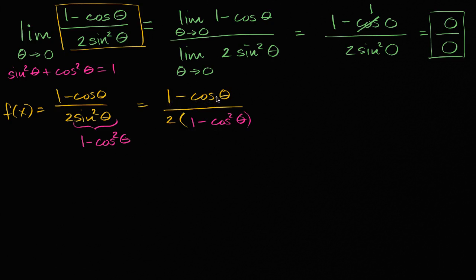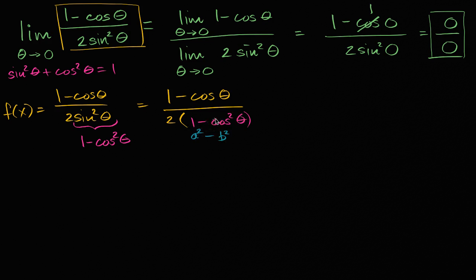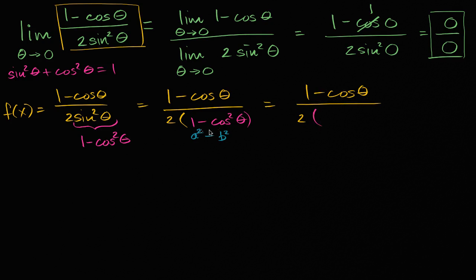Now this is a one minus cosine theta in the numerator and one minus cosine squared theta in the denominator. It's not completely obvious how to simplify it — until you realize that one minus cosine squared theta can be viewed as a difference of squares: a squared minus b squared, which factors as (a plus b)(a minus b). So we can rewrite this as one minus cosine theta over two times one plus cosine theta times one minus cosine theta.